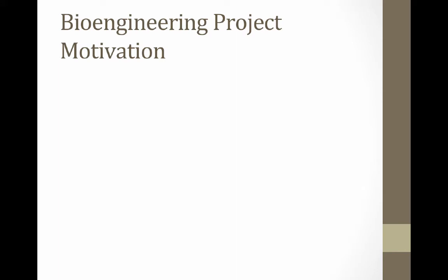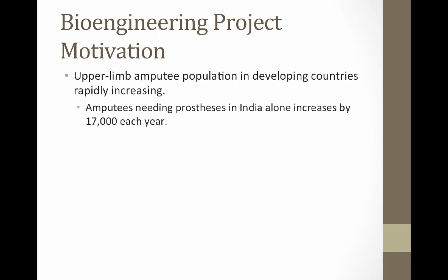Our bioengineering project for this unit is going to be to build a prosthetic arm, and we'll have several tasks that you'll have to be able to perform with that arm. We'll talk about those later, but let's talk about the motivation for this project — why we would want to do it. The upper limb amputee population in developing countries is rapidly increasing.